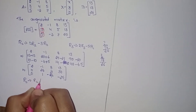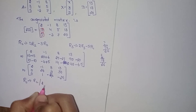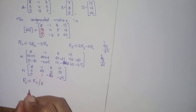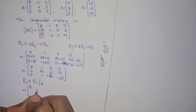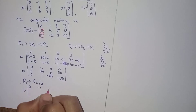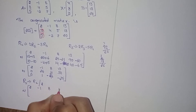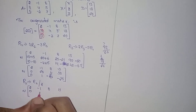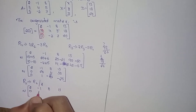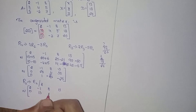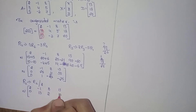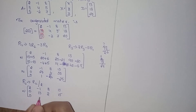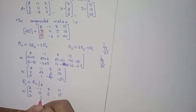Now divide R2 by 2. R1 stays as it is. R2 divided by 2: 0÷2=0, 26÷2=13, 4÷2=2, 30÷2=15. R3 remains as it is.